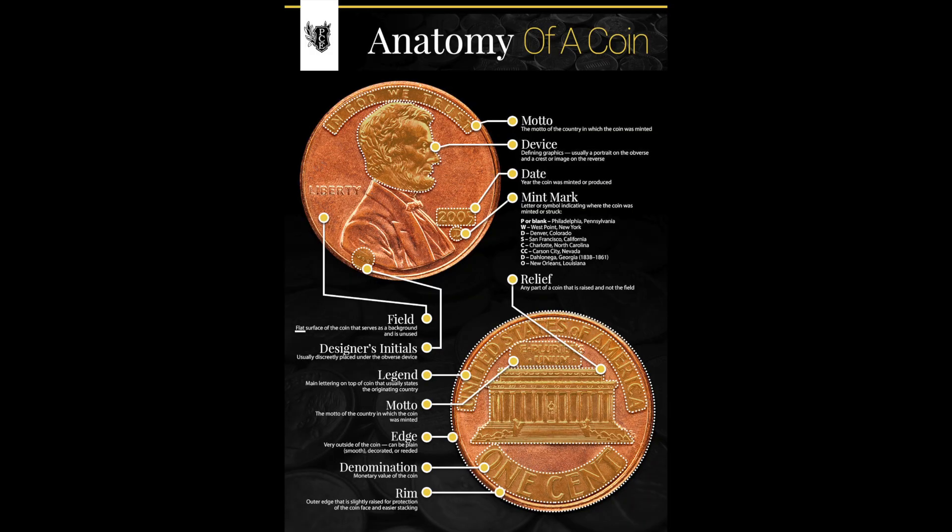The first thing I want to get into is the anatomy of a coin because it's the most basic we can get. Using a graphic to help break down the anatomy of a coin, some of the main terminology includes: the motto, the device, the date, the mint mark, relief, field, designer's initials, legend, edge, rim, and denomination.